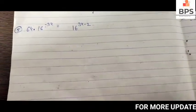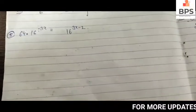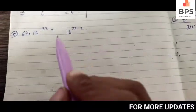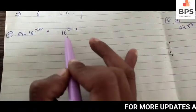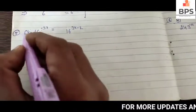Let's solve another problem. This is 64 times 16 to the power minus 3x is equal to 16 to the power minus 3x minus 2.